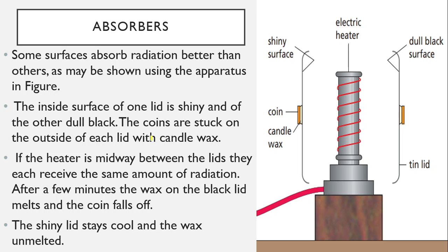When waves hit a surface, three things can happen: it gets reflected, transmitted, or absorbed. Our main area of concern is absorption. Some surfaces absorb radiation better than others. To demonstrate this, we use a circular heater with two attached surfaces — one with a shiny polished finish and the other with a dull matte black surface — to observe which is a better absorber.